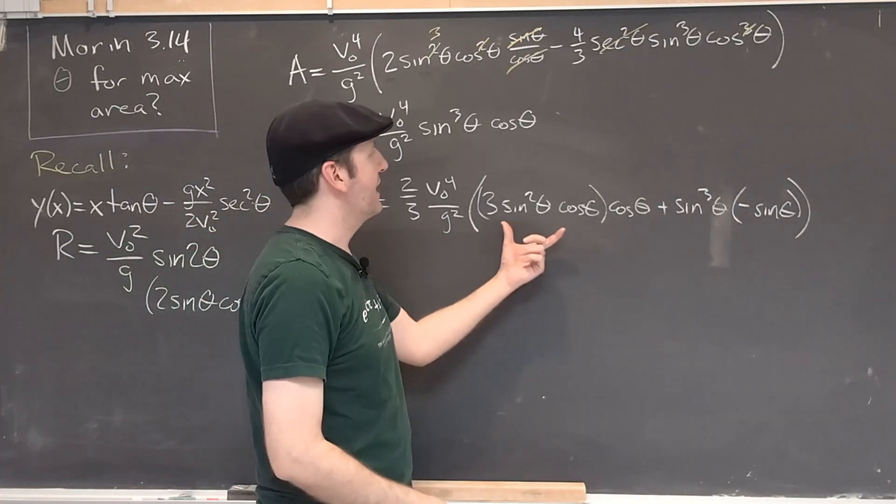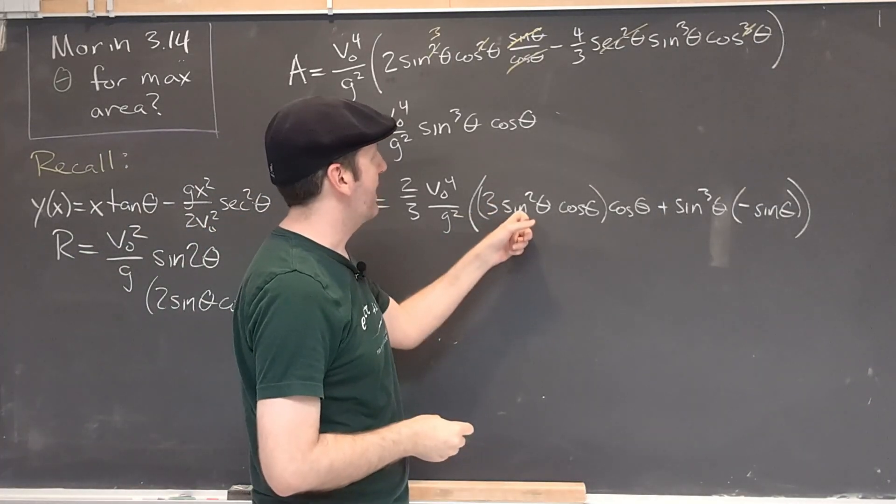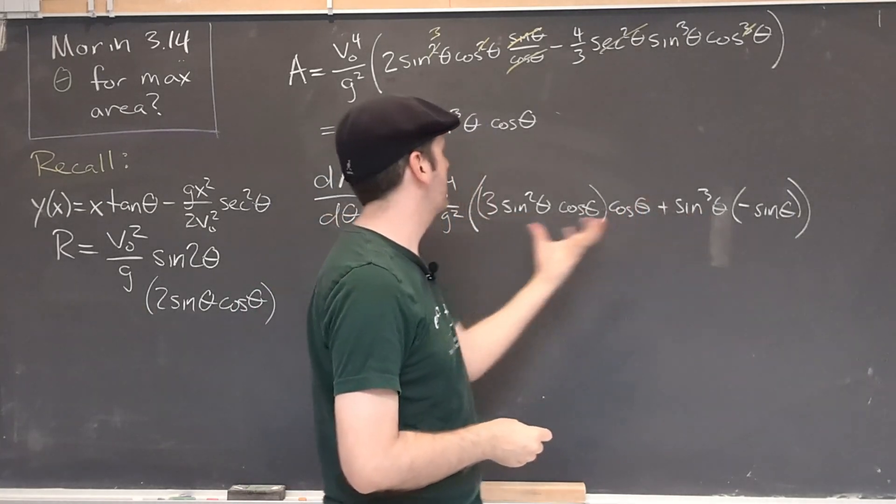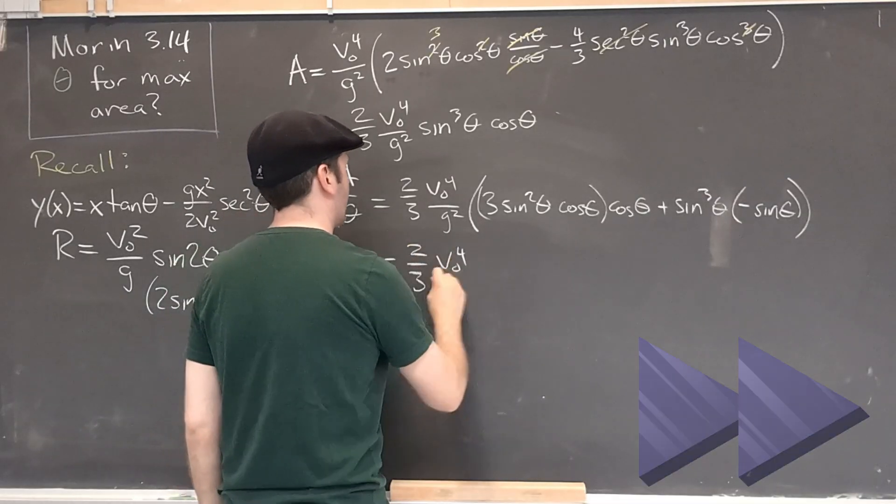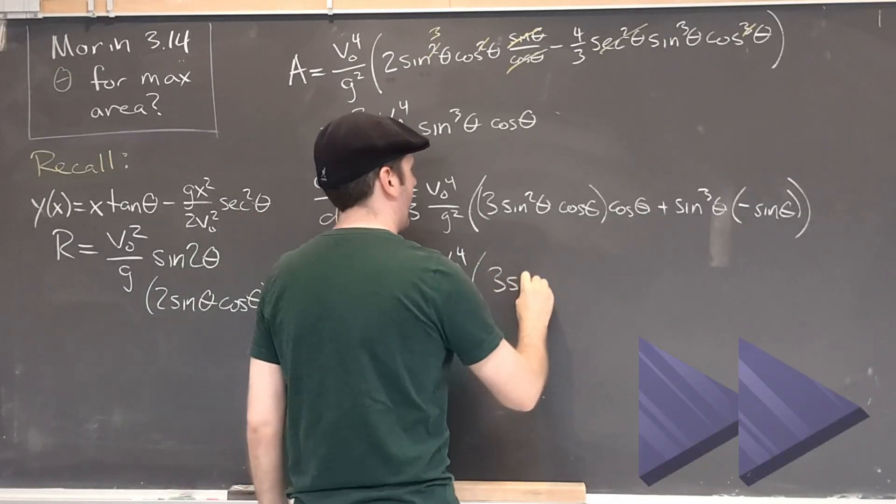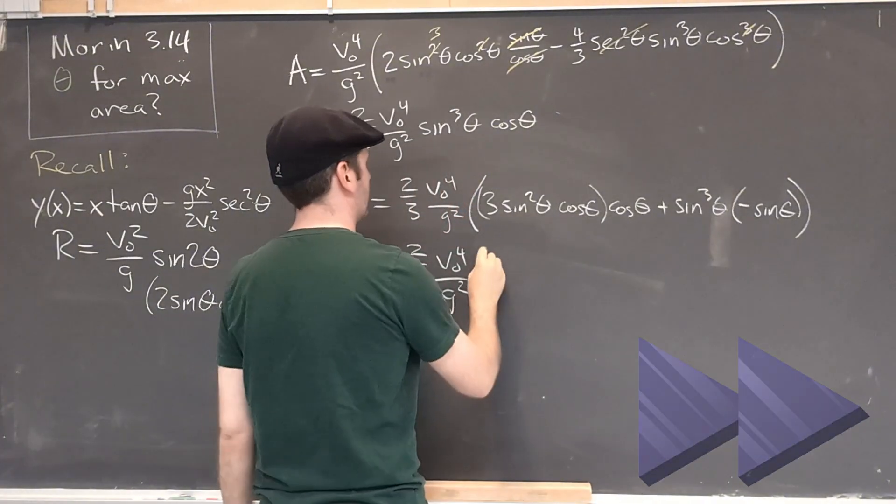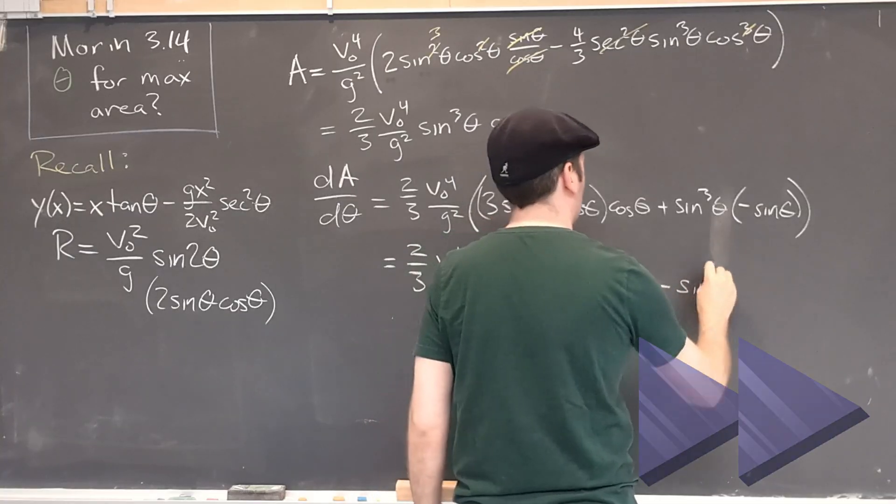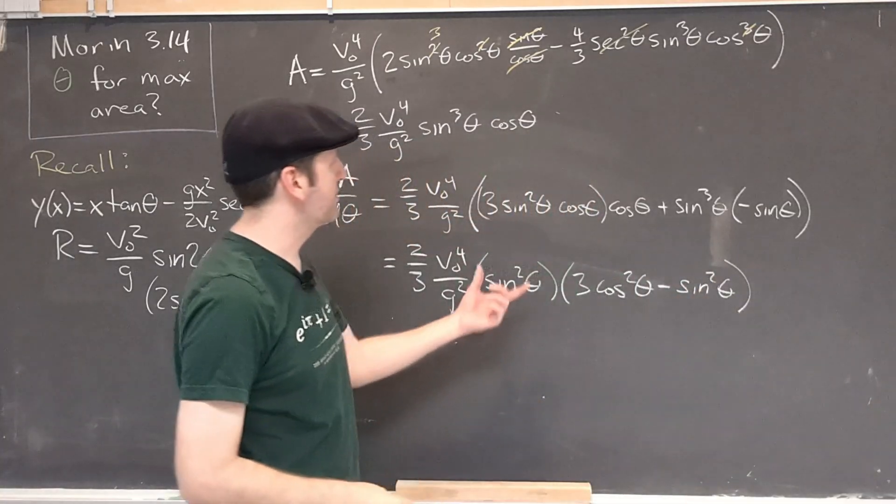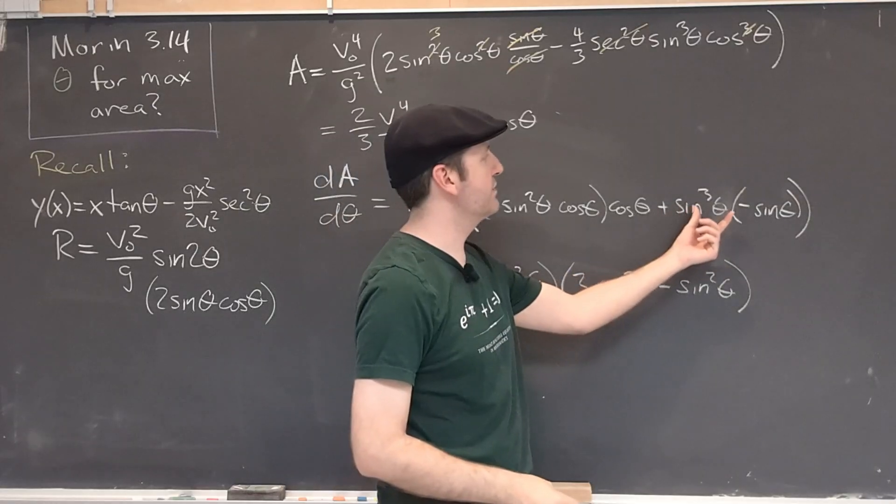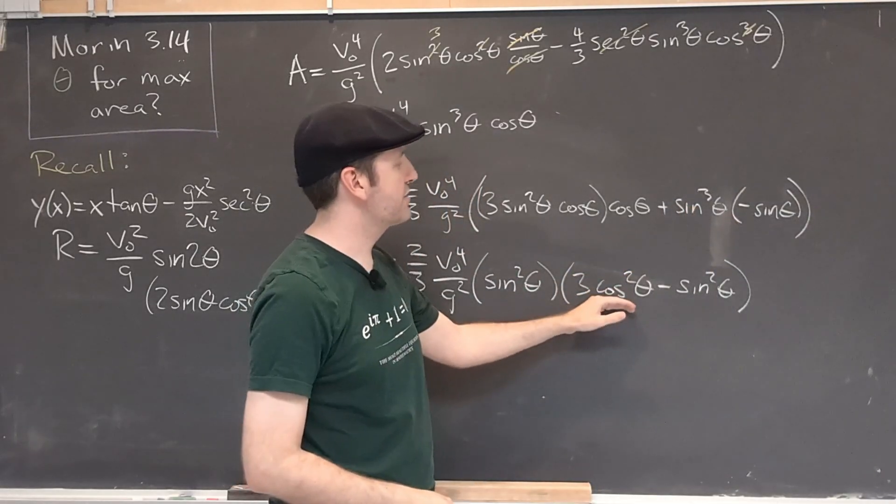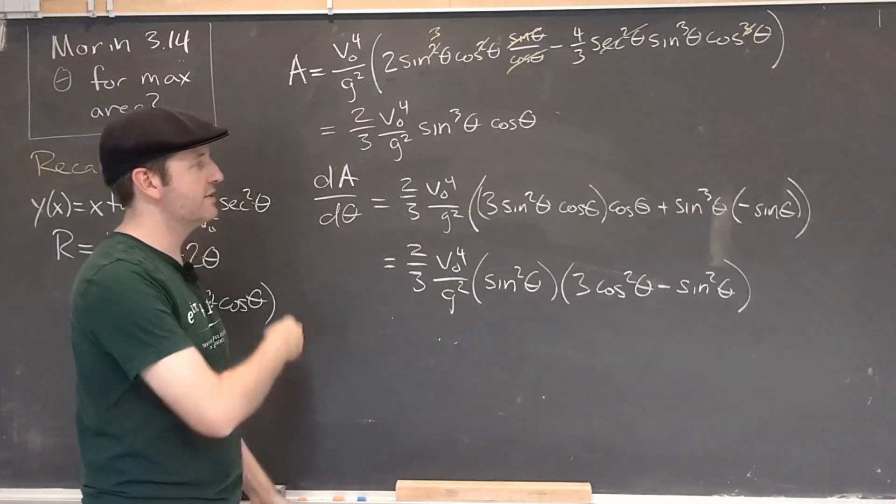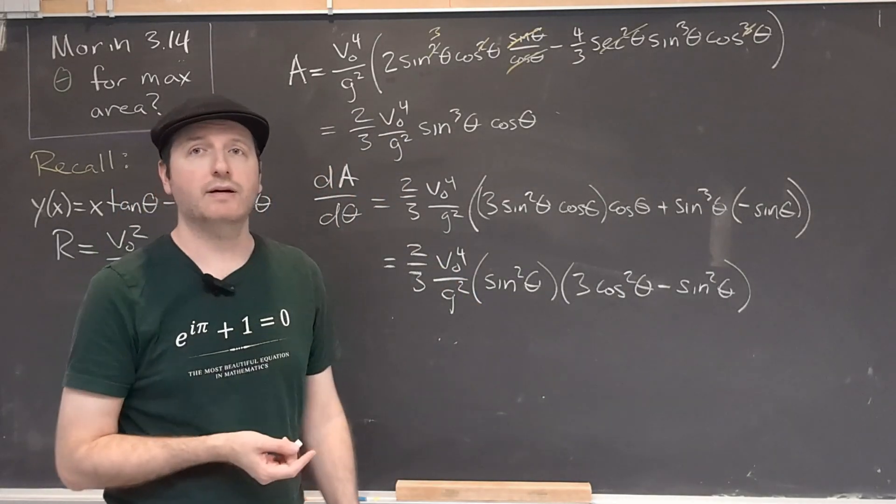These can be combined together a bit or factored a bit. Notice that I have a sine squared here and I have a sine squared in this one. Let's factor that to the front. So we factored a sine squared out of both terms. That leaves us with 3 cosine squared minus sine squared times sine squared. And remember that our goal is to set this derivative equal to 0 to maximize this function.